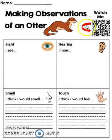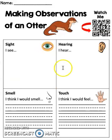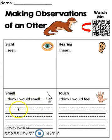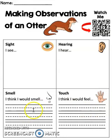As you're watching the video, we want you to draw a picture or write words of things you see and hear. Then we want you to think about what you would smell if you were there, or if you were able to touch a sea otter, what you think it would feel like, and write those words on the lines. Have fun!